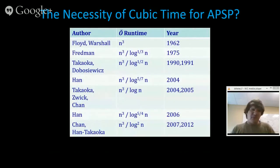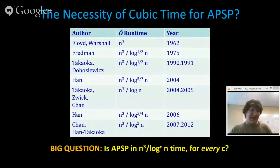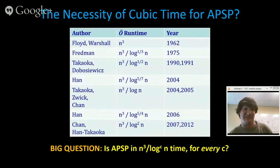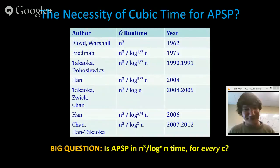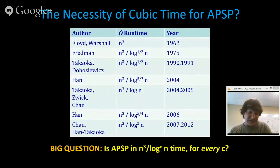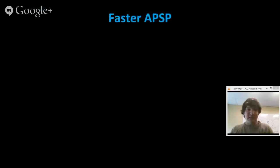We're building a theory of hardness and completeness at polynomial time, reasoning that APSP is hard to solve in truly subcubic time — similar to how we believe NP-hard problems are hard. A big question, even before addressing truly subcubic time, is whether APSP is in n³ / log^c n time for every constant c. This is sometimes called 'shaving logs' — can we get a clean shave of all polylog factors off the complexity of APSP?